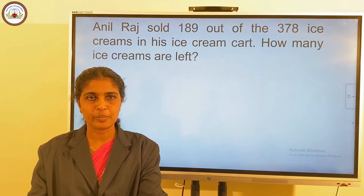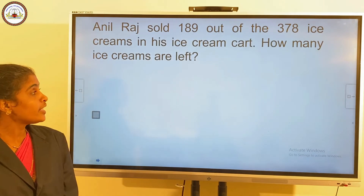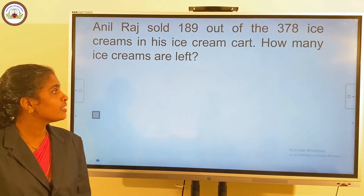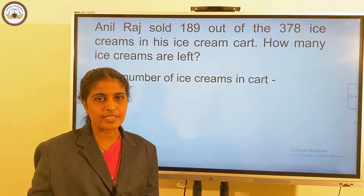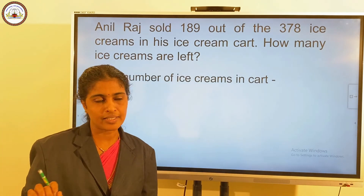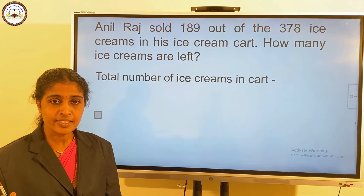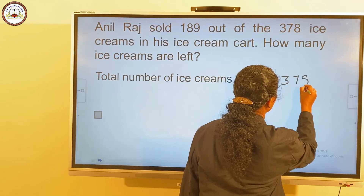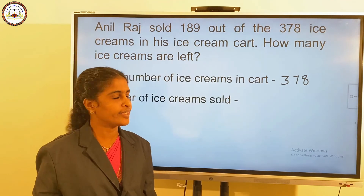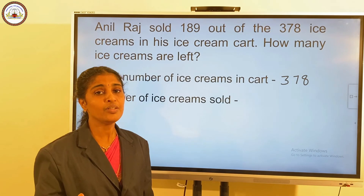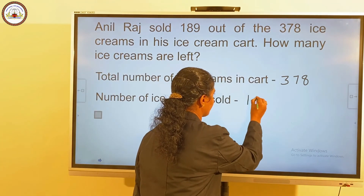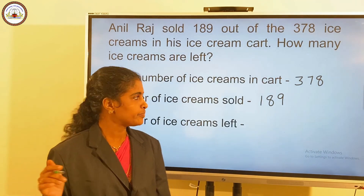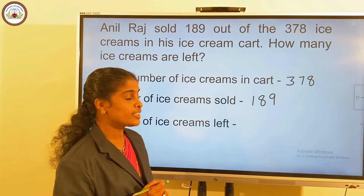Now we have a word problem. A vendor sold 189 out of 378 ice creams in his ice cream cart. How many ice creams are left? First step: total number of ice creams in the cart is 378. Second step: number of ice creams sold is 189. The last step: number of ice creams left equals 378 minus 189.